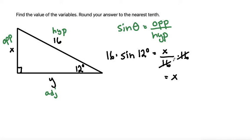From here, we can grab our calculator. Make sure, since our angle is in degrees, that you have your calculator set in degrees. So we can do 16 times the sine of 12 degrees. And I get that to be 3.326 and it keeps going.